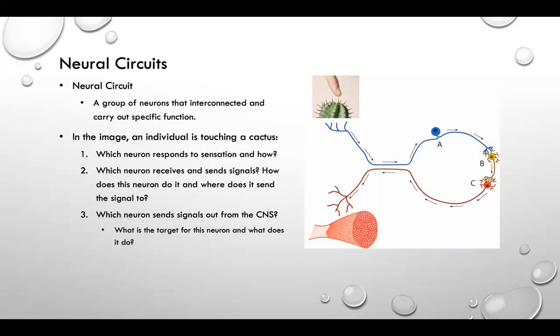The second question is which neuron receives and sends a signal? How does this neuron do it and where does it send the signal to? We can see based on the image that neuron B receives the signal and sends an action potential to neuron C. And we can see that this occurs within the CNS.